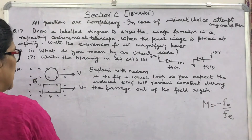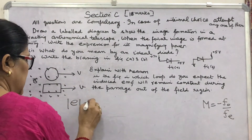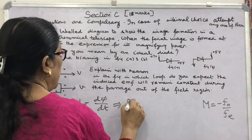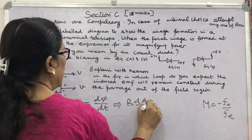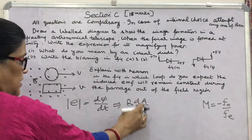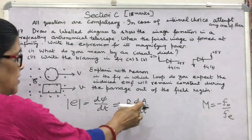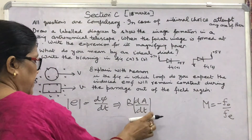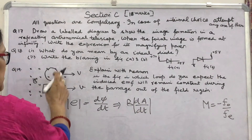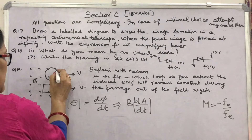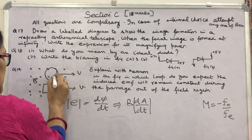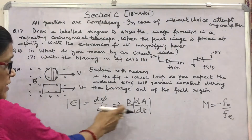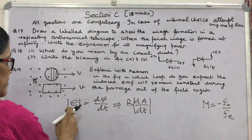The induced EMF magnitude is given by d-phi by dt, which can be written as B into dA by dt — where B is the magnetic field and dA/dt is the rate of change of area. In the case of the circular loop coming out with constant velocity, the area strip coming out is different at each instant, so dA/dt is different and therefore E will be different.